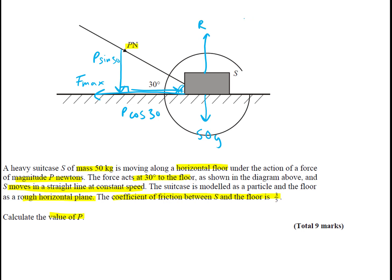Now let's start. Let's resolve vertically, and we know we're going to use F equals μR, and I like to say Fmax. So what do we have? We have 50g, so we have R equals 50g plus P sin 30. That's because that's acting down here, and this is acting down. Wonderful.